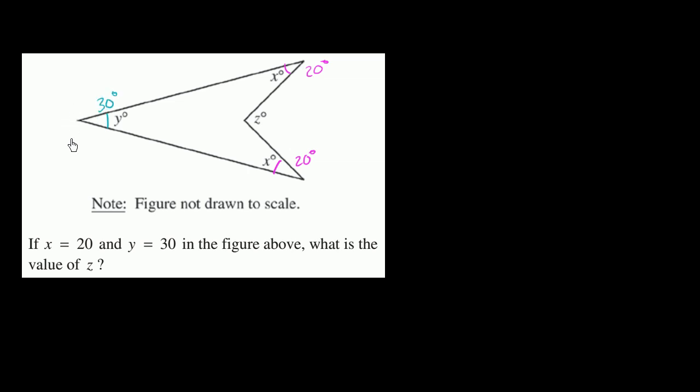In the figure above, what is the value of z right over here? This is a little bit strange at first because it feels like we might be able to use triangles somehow, but this whole shape is not a triangle.